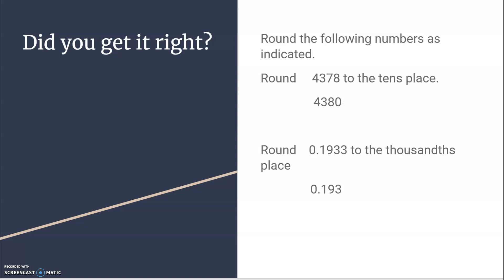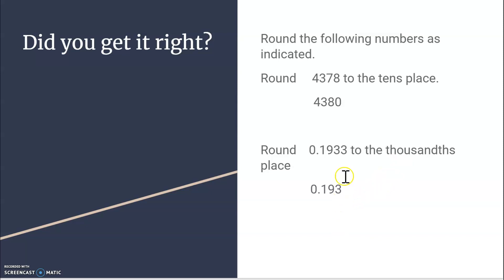Did you get them right? For 4378 rounded to the tens place: the seven is the tens place, what's after the seven is an eight — greater than five — so I round up to 4380. For the second problem, rounding 0.1933 to the thousandths place: the first three is the thousandths place, and the number after that is three — less than five — so I just drop it and it becomes 0.193.